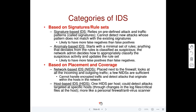A signature-based IDS is less likely to cause false positives but more likely to have false negatives, which is not good. That is why people prefer the second category called anomaly-based IDS, which starts with a very minimal set of rules. Anything that deviates from these rules is classified as suspicious and reported to the admin. The admin reviews the log files and decides whether to classify the activity as good or bad, then updates or expands the rule set.